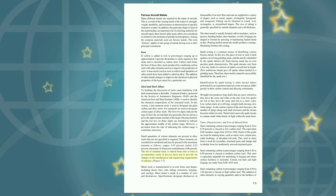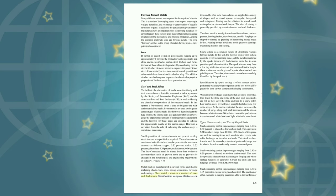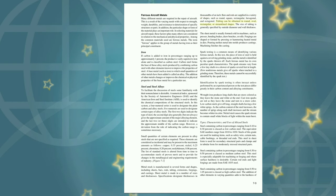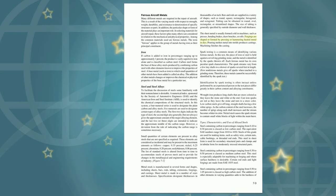Metal stock is manufactured in several forms and shapes including sheets, bars, rods, tubing, extrusions, forgings, and castings. Sheet metal is made in a number of sizes and thicknesses; specifications designate thicknesses in thousandths of an inch. Bars and rods are supplied in a variety of shapes such as round, square, rectangular, hexagonal, and octagonal. Tubing can be obtained in round, oval, rectangular, or streamlined shapes, with size generally specified by outside diameter and wall thickness. Sheet metal is usually formed cold in machines such as presses, bending brakes, draw benches, or rolls. Forgings are shaped by pressing or hammering heated metal in dies. Pouring molten metal into molds produces castings.